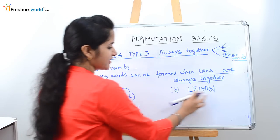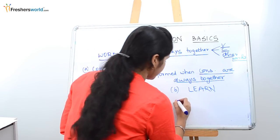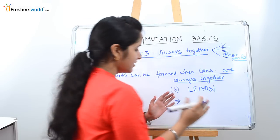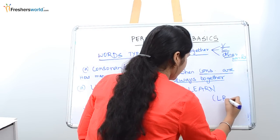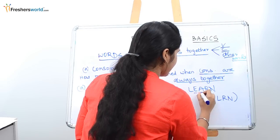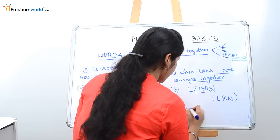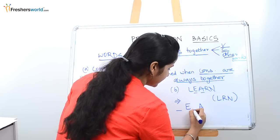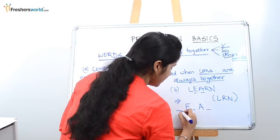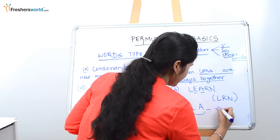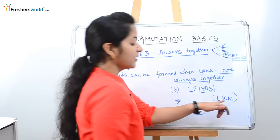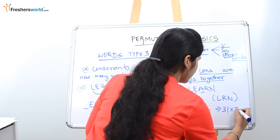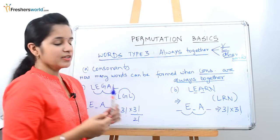Let's take another example with the word LEARN. What do we do here? We club the consonants together: L, R, N. The remaining letters are E and A. What are the places in which L, R, N can be placed? Either here, here, or here — so we have three places, and we write it as 3 factorial. And how many ways can L, R, N be arranged? In 3 factorial ways.